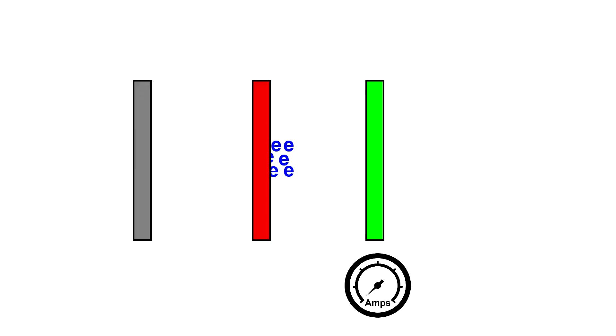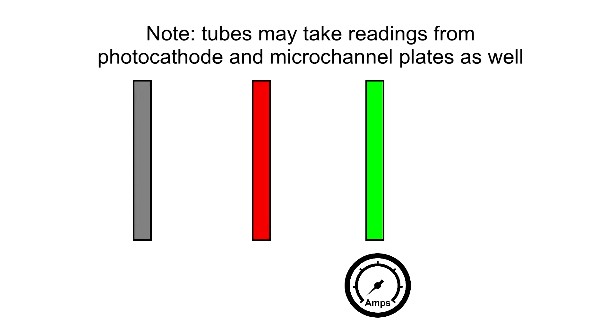Moreover, when electrons hit the phosphor screen, it generates a current that can be measured by the tube's power supply. When light levels are low, few electrons will reach the phosphor screen, and hence the current measurement will be low. However, if light levels are high, then the amount of electrons reaching the phosphor screen will increase, and hence the current measurement will increase with it. This is basically how tubes are able to tell if they're in pitch black or if they're in a room with the lights on.